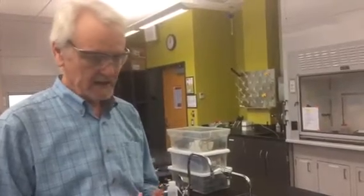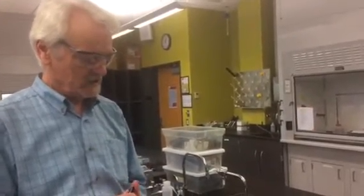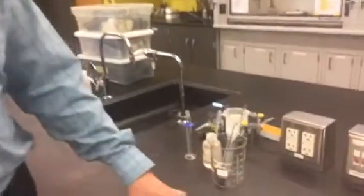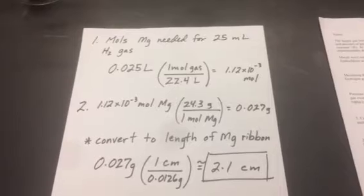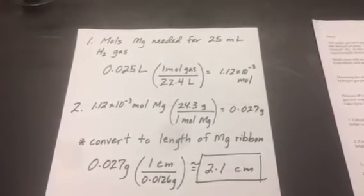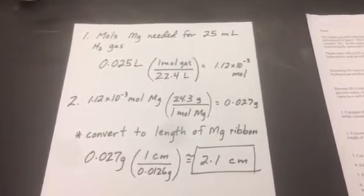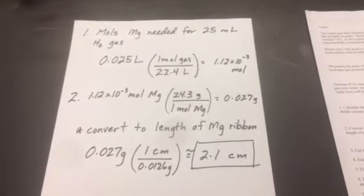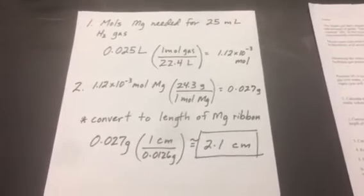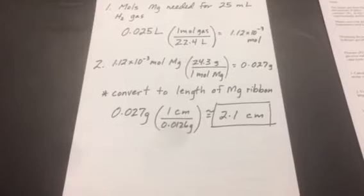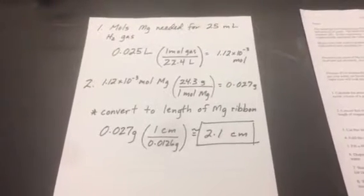The first two things you're told to do as you look at your procedure is to calculate the length of magnesium ribbon that you're supposed to use, and I've outlined those calculations for you here on this piece of paper. Basically use the standard molar volume to try and figure out about how many moles of hydrogen gas would represent about 25 milliliters, and then because of the one-to-one stoichiometry of the reaction that you've seen before, we can turn that into a mass amount of magnesium, and then using the lineal density of the magnesium ribbon, we can get an approximate length of ribbon to cut and use in our experiment.